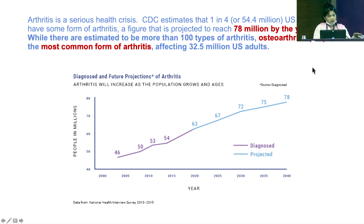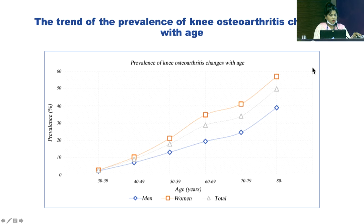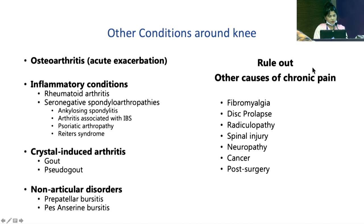The knee osteoarthritis prevalence has doubled since the mid-20th century. In 2017–18 there were 54 million people in the US alone affected, and it's been projected to reach 78 million by 2040. As age increases, the prevalence increases up to 70%, with women being maximally affected in the older age groups. Other inflammatory conditions around the knee include rheumatoid arthritis, seronegative spondyloarthropathies, and crystal-induced arthropathies like gout and pseudogout.